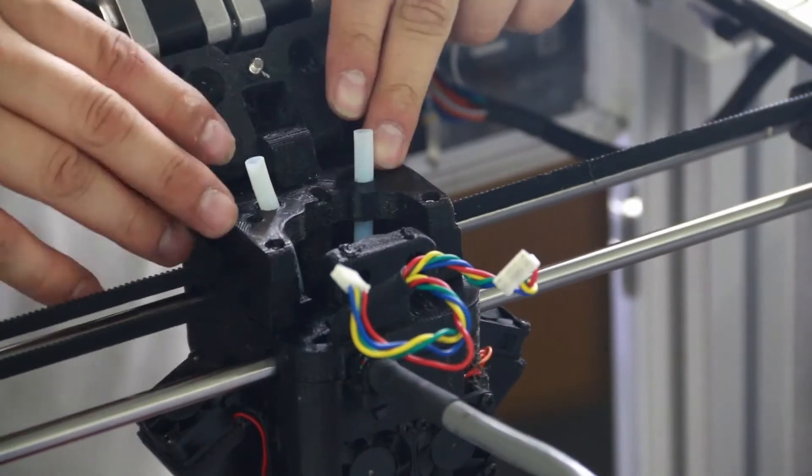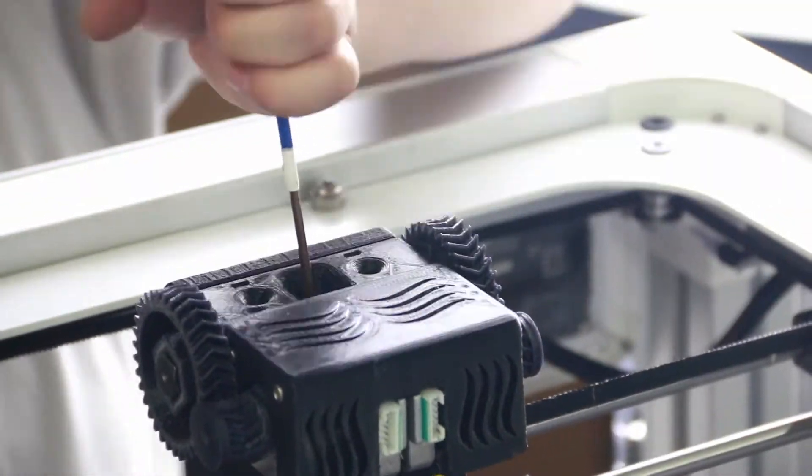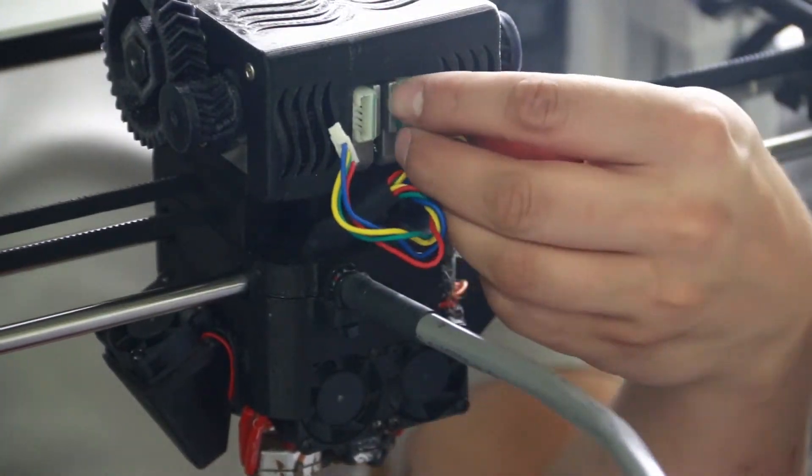Tilt motor housing back to its original position. Install M3 socket head cap screw. Reconnect the motor harness.